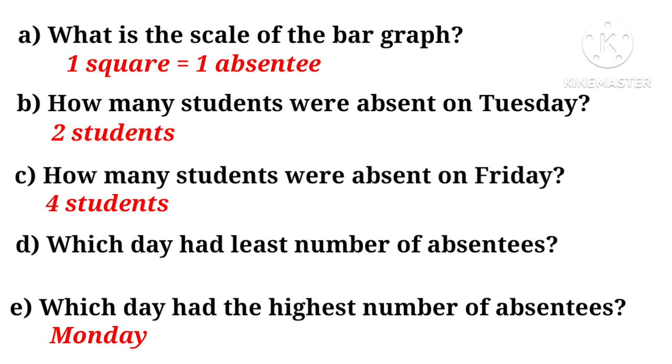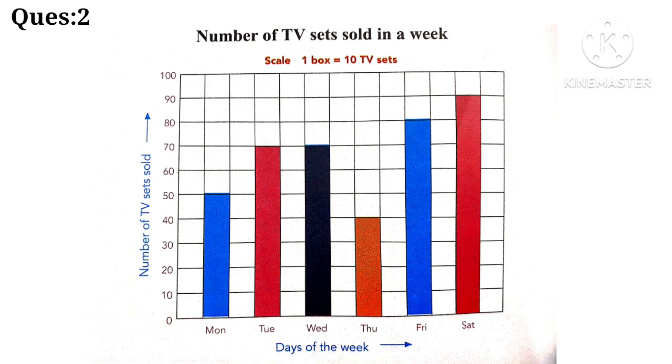Now, we will practice one more question. Again, see the graph carefully. This is showing number of TV sets sold. And now, bottom is showing the days. In this question, scale is already written. One box equals ten TV sets. Now, let's read the questions and try to solve them.